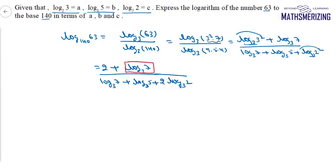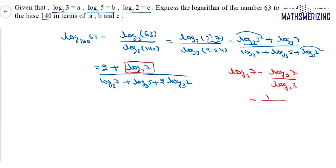Now I can write log 7 base 3 using the base change formula as log 7 base 2 divided by log 3 base 2. And log 7 base 2 is 1 over log 2 base 7, which is 1 over c. Also, log 3 base 2 is a. So log 7 base 3 is simply 1 upon ac.